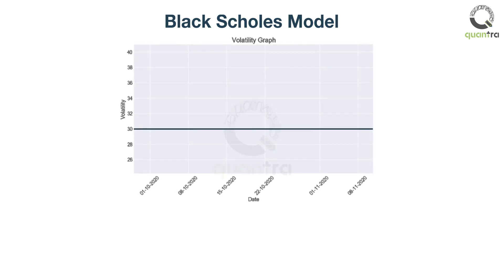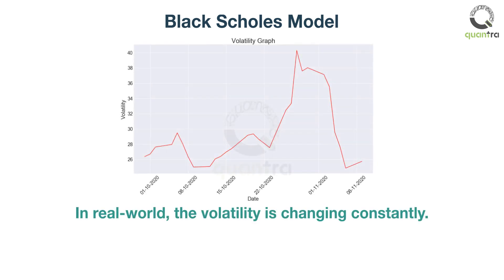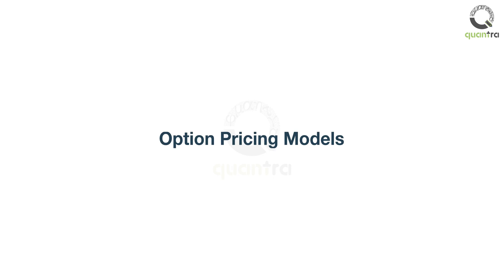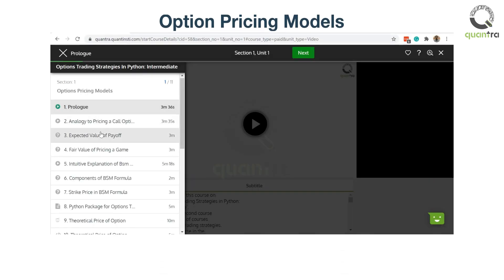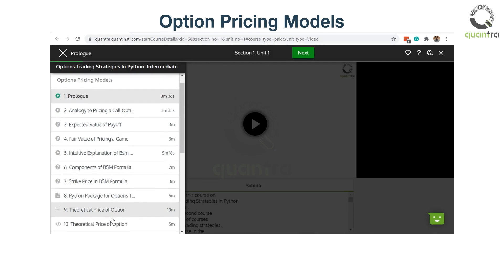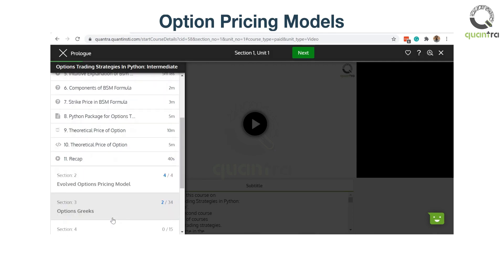However, the model has a few limitations when it comes to volatility. The model assumes that the volatility of the stock is constant from the time you buy the option to its expiry. But in the real world, the volatility is changing constantly. To help overcome this problem of constant volatility, the Derman-Kani model and Heston model were invented. All three models, their calculations, and examples are provided in the course.